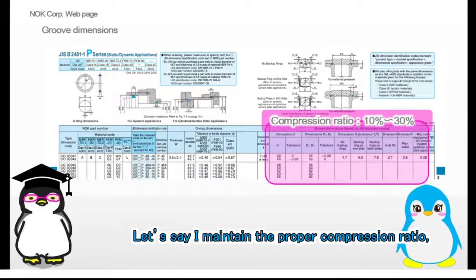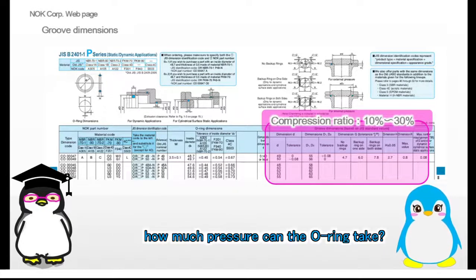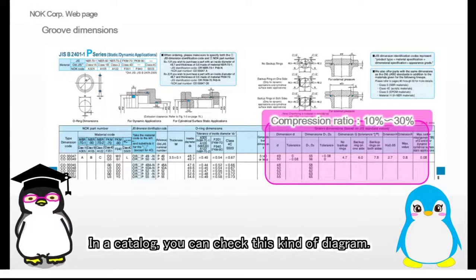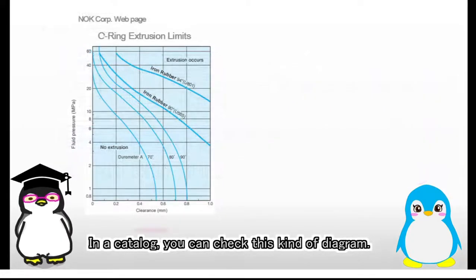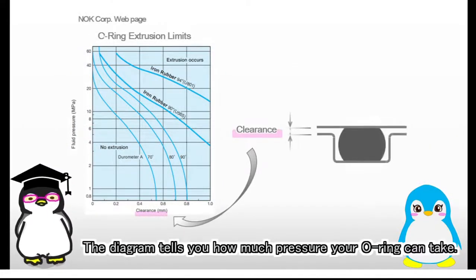Let's say I maintain the proper compression ratio. How much pressure can the O-ring take? In a catalog, you can check this kind of diagram. The diagram tells you how much pressure your O-ring can take.